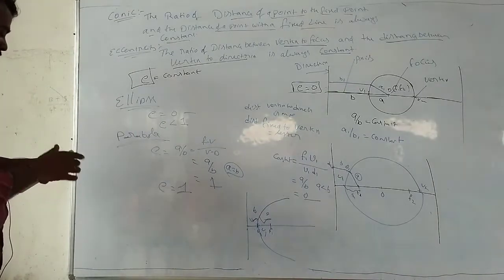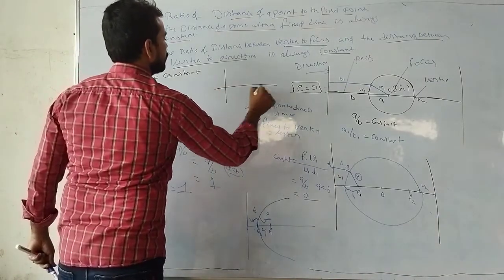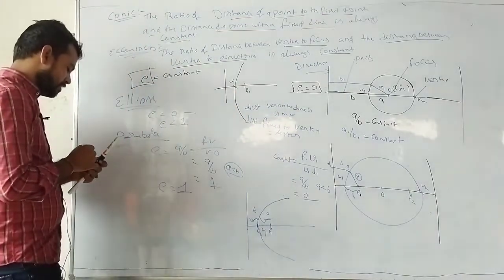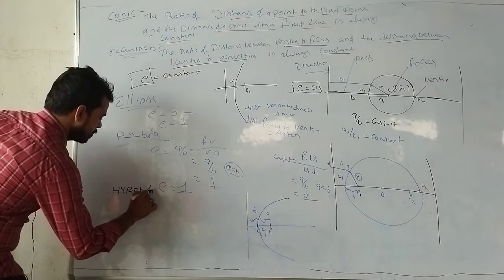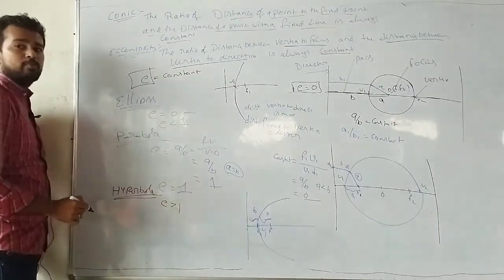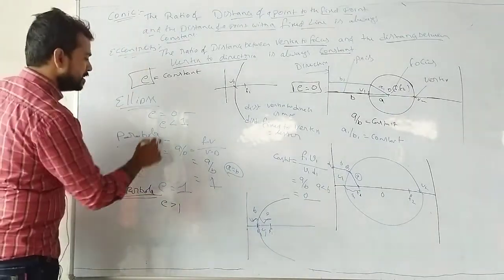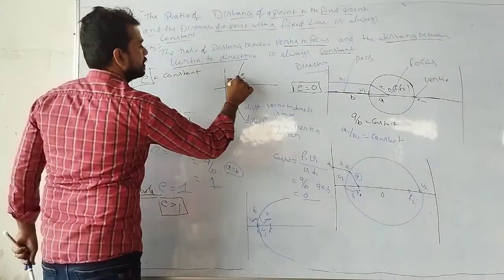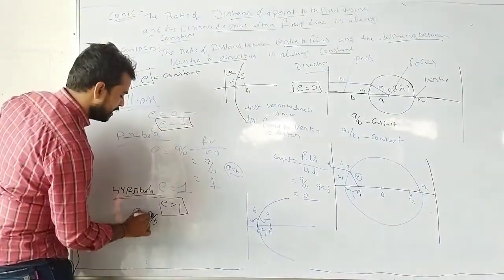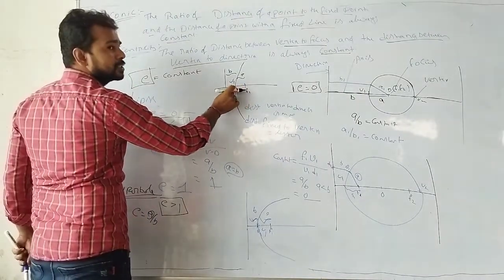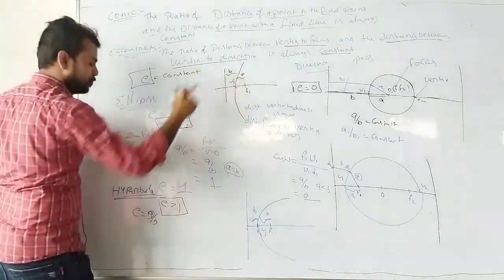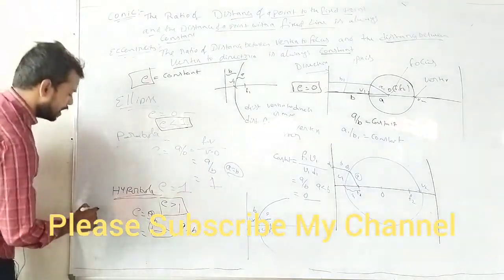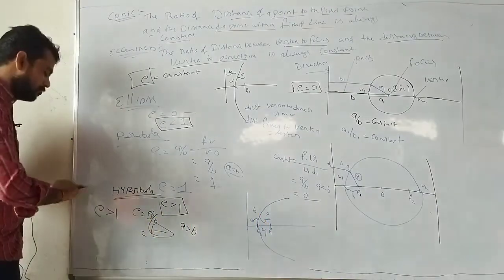For hyperbola, E is greater than 1. Hyperbola is somewhat opposite to ellipse: for ellipse E is less than 1, so for hyperbola E is greater than 1. Here A is greater than B — the vertex to focus distance is more than vertex to directrix. So the ratio exceeds 1. For hyperbola, E is greater than 1.